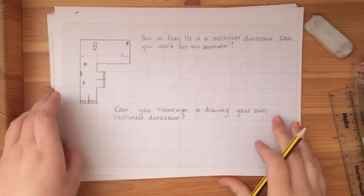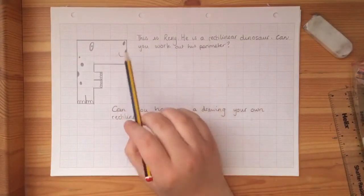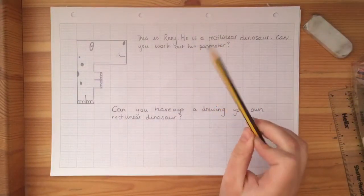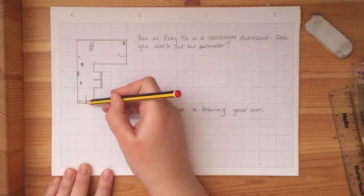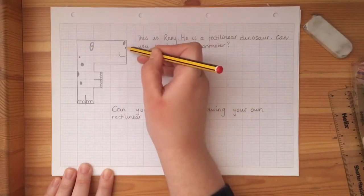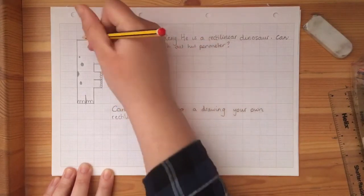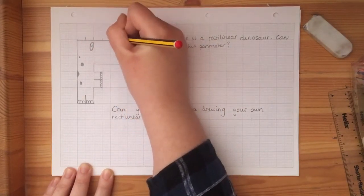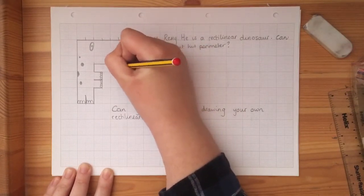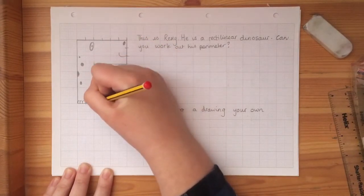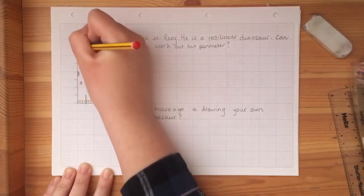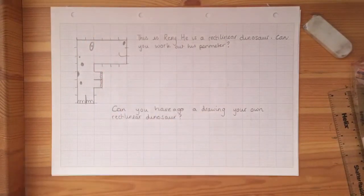So I have a challenge for you now. This is Rexy. He is a rectilinear dinosaur. Can you work out his perimeter? So I have made it a little bit clearer for his legs and his arms. So those are two squares there. And for his face, that is three squares. What I'll do is I'll draw a little line where each square starts to make it easier. And all you've got to do is when you pause the video, you've got to work out the total perimeter for Rexy. Off you go.